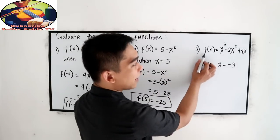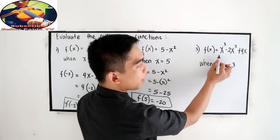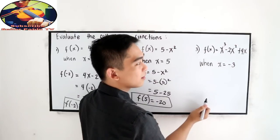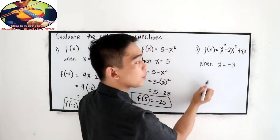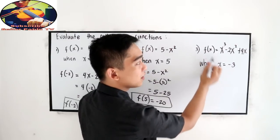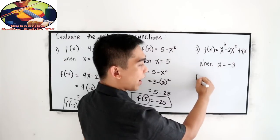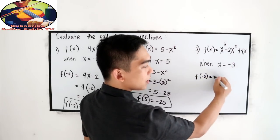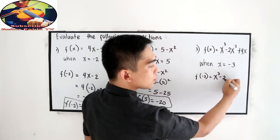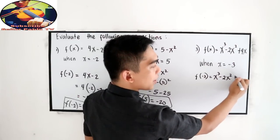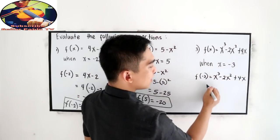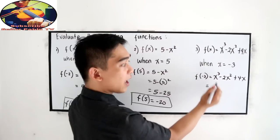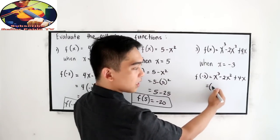Next, f of x is equal to x cubed minus 2x squared plus 4x, when x is equal to negative 3. So f of negative 3 — copy — x cubed minus 2x squared plus 4x. Now substitute the value of x, in this case negative 3.